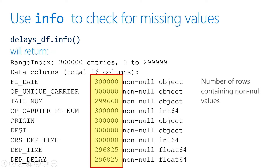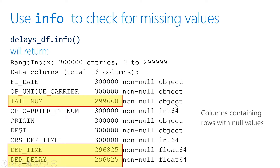But when I hit tail number, out of those 300,000 rows, only about 299,000 of them have actual non-null values. That means some of those rows do contain a null or a missing value. You can see there are actually three different columns that have a number lower than 300,000 for non-null, indicating there are some missing values for some rows in those three columns.